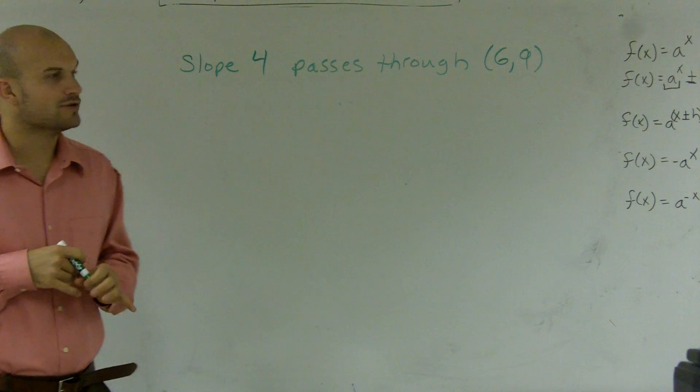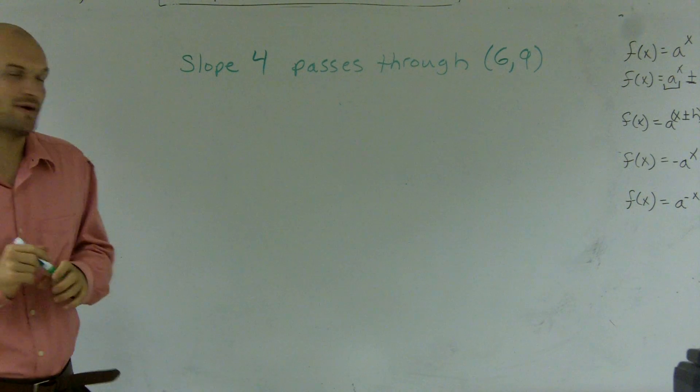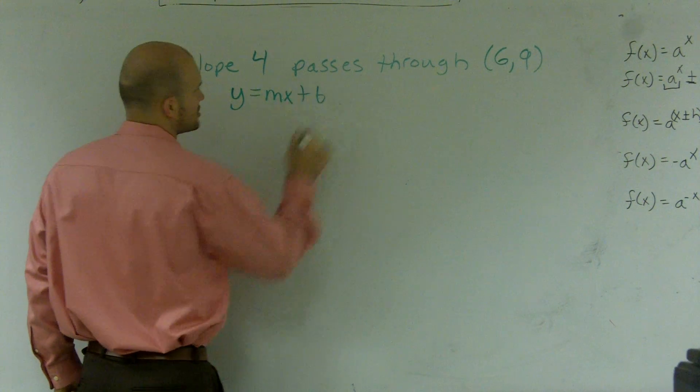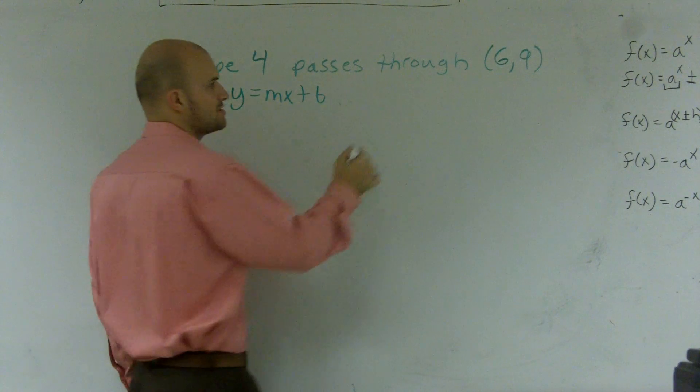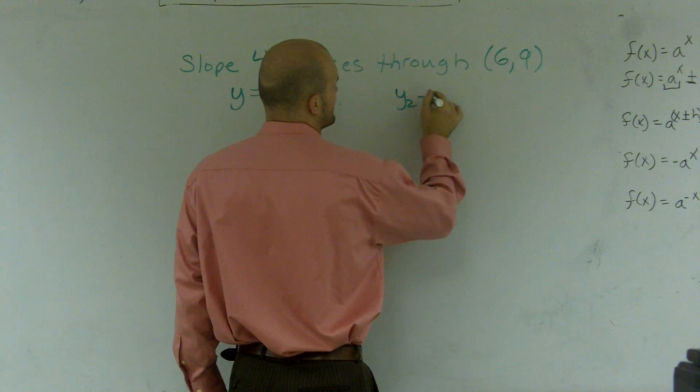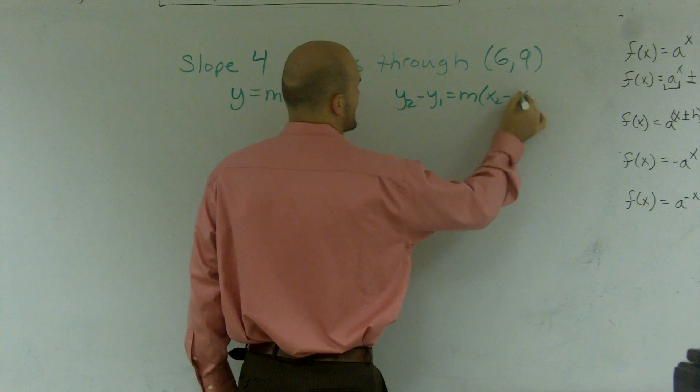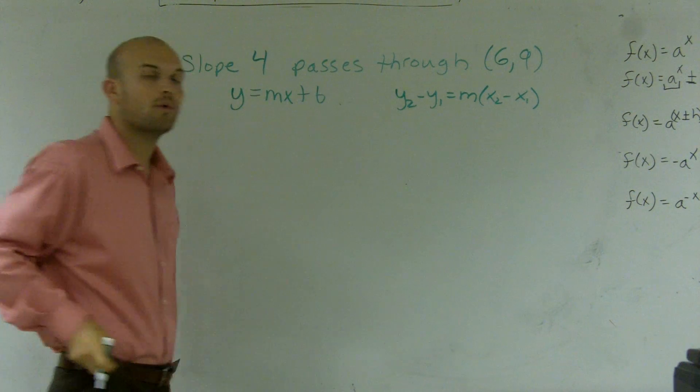So first thing I'm going to do is just remember we can write an equation in two different forms. We can write it as y equals mx plus b, which is called the slope-intercept form. And we can also write it as y2 minus y1 equals m times x2 minus x1, which we call the point-slope form.